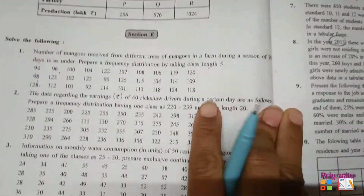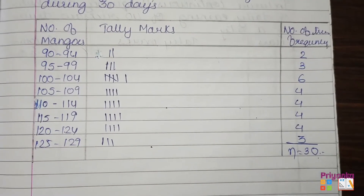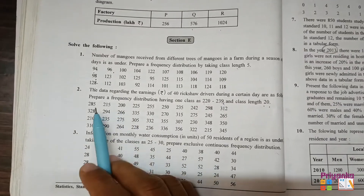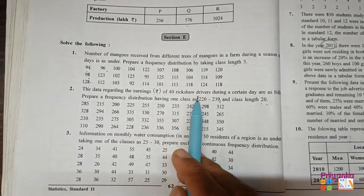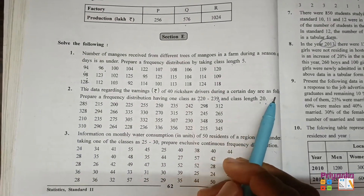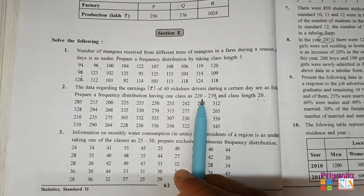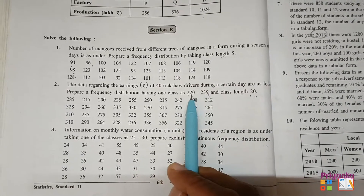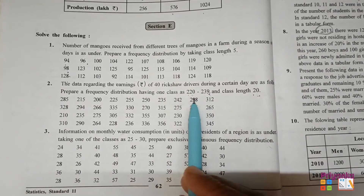After completing the tally marking, the total frequency is 30, which matches the question stating a season of 30 days. Moving to Question 2: data regarding the earnings of 40 rickshaw drivers during a certain day is given. Prepare a frequency distribution having one class as 220 to 239 and class length 20.